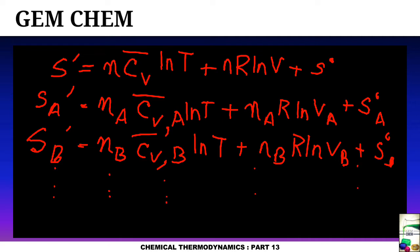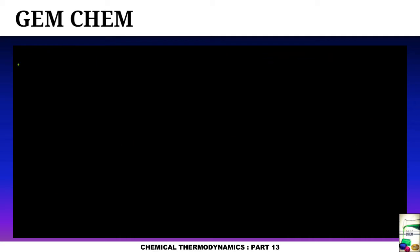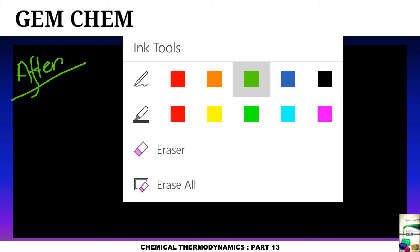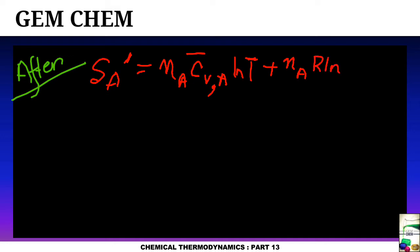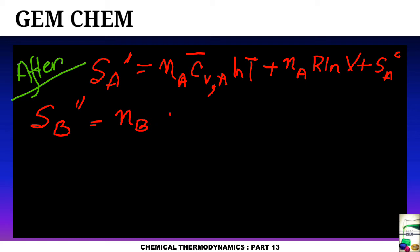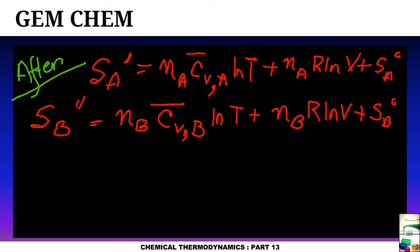After mixing is complete, the entropy values change. S''_A = n_A·C̄_v,A·ln T + n_A·R·ln V + S₀_A, where the volume is now the total volume V instead of V_A. Similarly, S''_B = n_B·C̄_v,B·ln T + n_B·R·ln V + S₀_B. The temperature T is the same final temperature for both cases, and this pattern continues for all components.